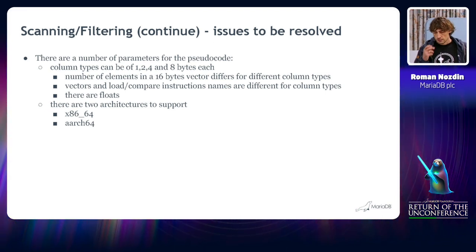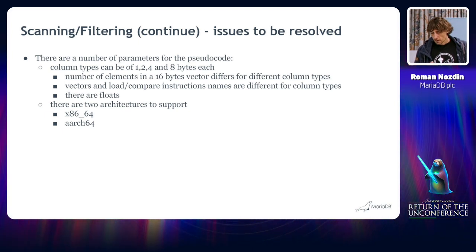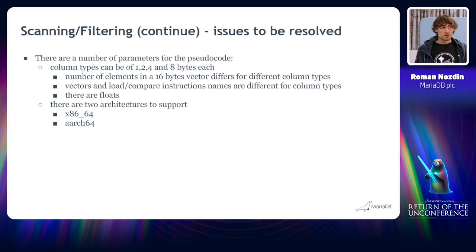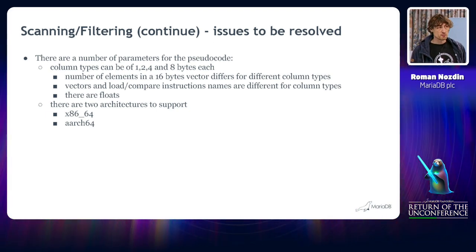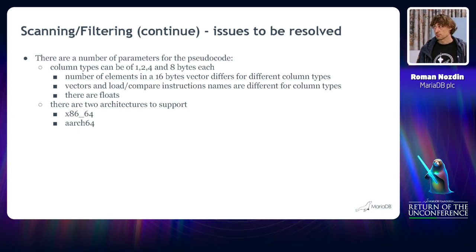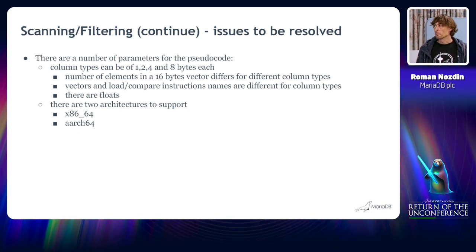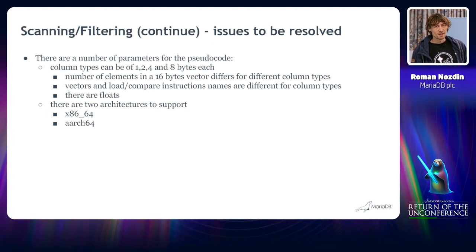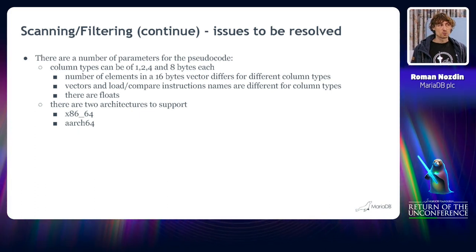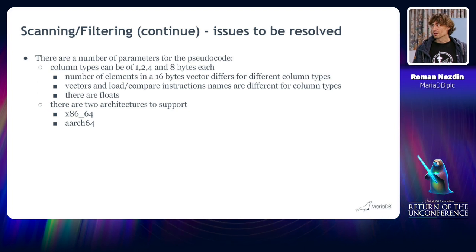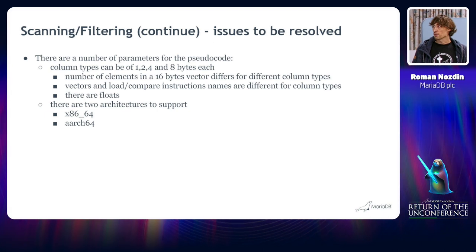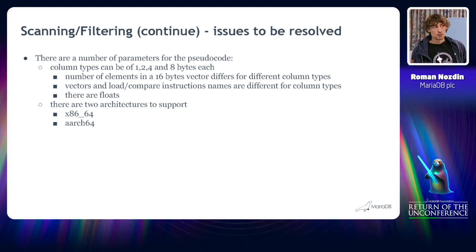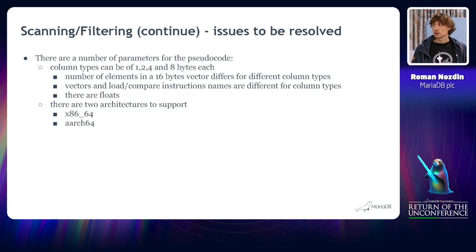Another parameter is that the first parameter, the number of values in the vector affects the second. Basically, the SIMD instructions have different names. We have different instructions to process different types of data. That is natural. There are also floats. And floats have another set of SIMD instructions to use. And there are two architectures that must be taken into account. So we have a number of parameters that somehow need to be introduced into that pseudocode that I shared previously.